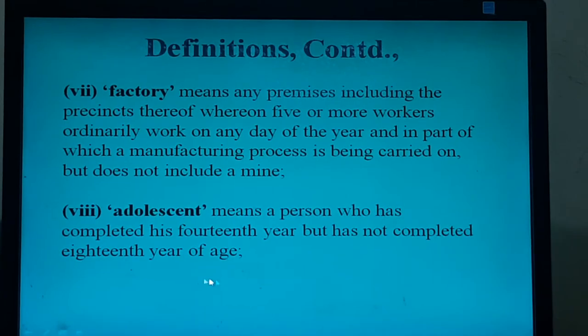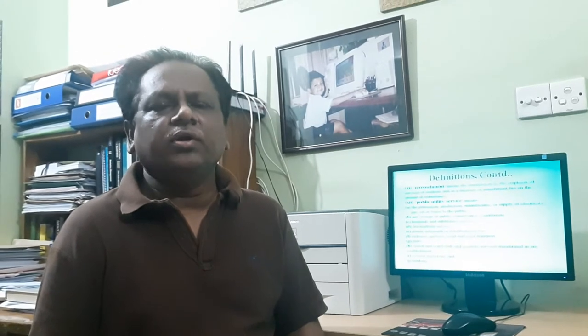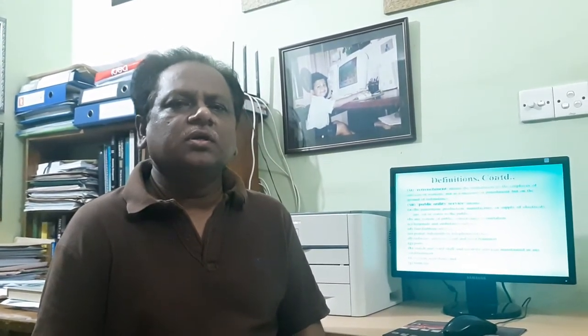Adolescent means a person who has completed his 14th year but has not completed 18th year of age. Retrenchment is explained in this law as the termination of a worker from the job not because he or she is being punished, but because he or she is redundant. That means due to redundancy, when workers are terminated, it is called retrenchment.